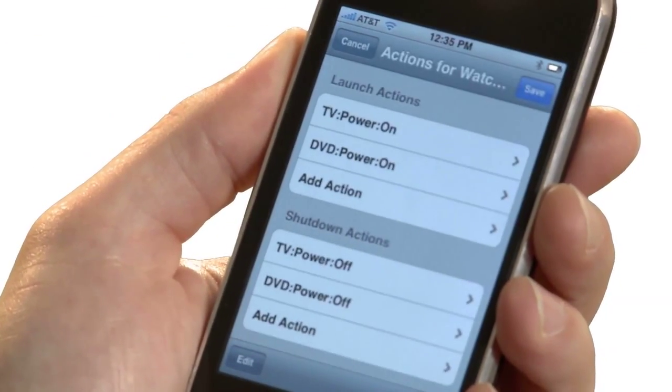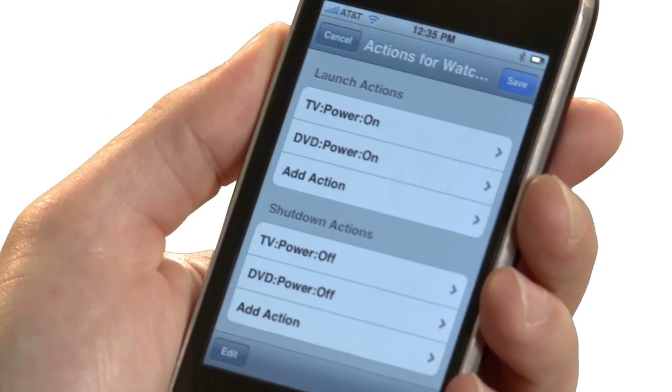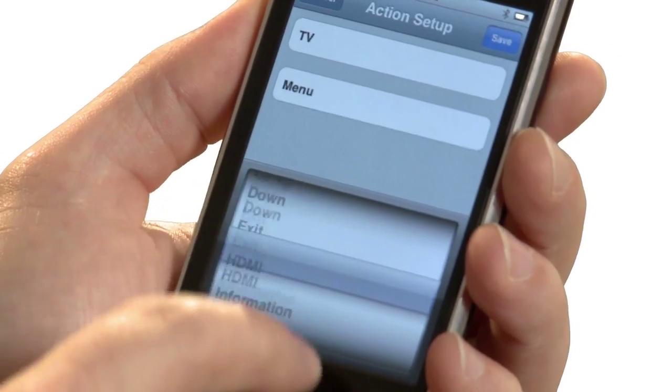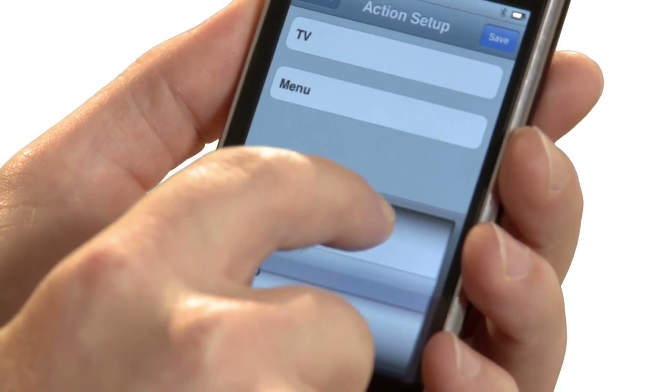Next, RedEye will propose a list of actions that you take when you launch and shut down your activity. Typically, these involve turning on or off the power to your devices. When I watch a DVD, I need to switch the TV to the component input, so I'll add that now. Once your launch and shut down actions are in place, tap the Save button to finish creating your activity.